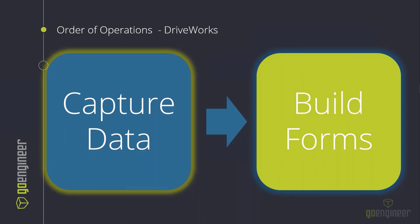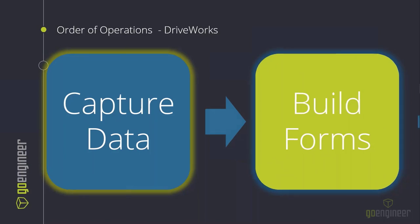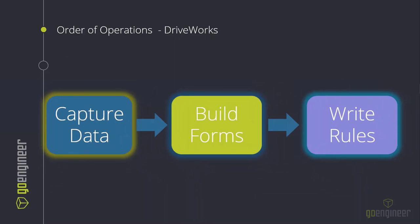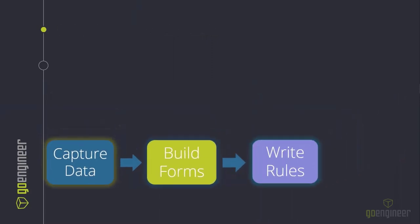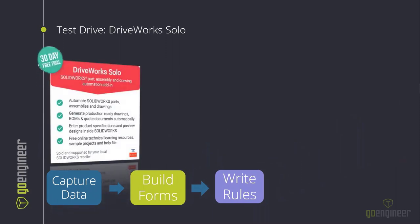The order of operations in DriveWorks is the same whether you're using Express, Solo, or Professional. It starts by capturing data — any data that can change. Then you build forms that the end user fills out as inputs: things like overall length, width, depth, and color options. Finally, you write rules to map those inputs into the captured data. That's it. Express will only take you so far, and if you want to automate more than just parts, assemblies, and drawings — like sales documents — you can scale your Express project into DriveWorks Solo.